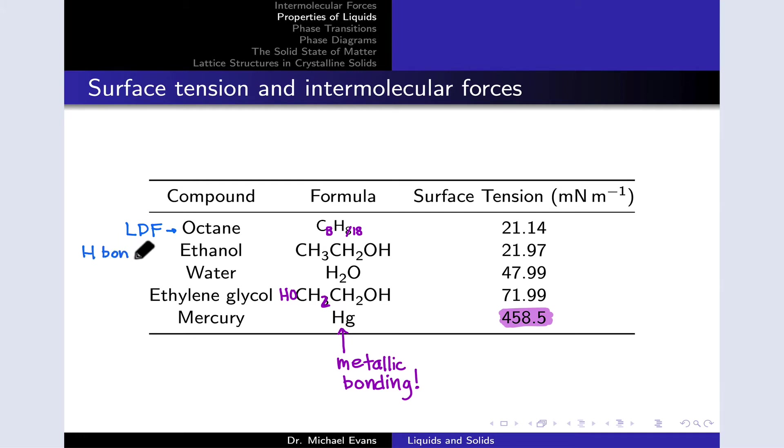Higher surface tensions, a greater tendency to form droplets, stronger cohesive forces due to the stronger IMFs. As we add more hydrogen bonding groups and make the molecules a little bit bigger, the surface tension tends to go up.